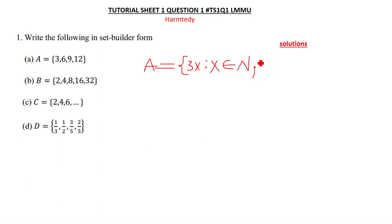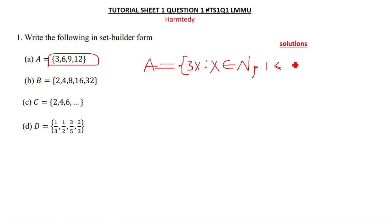The comma here means 'where', so where we write the interval containing all these numbers. When you put x=1 you get 3, x=2 you get 6, x=3 you get 9, x=4 you get 12. So x ranges from 1 to 4, and since we include both endpoints we write 1 ≤ x ≤ 4. This gives us our complete set builder notation for the given set.